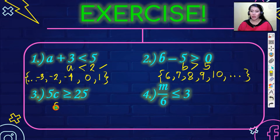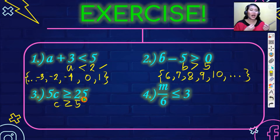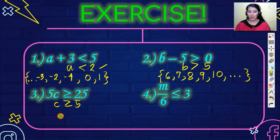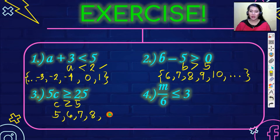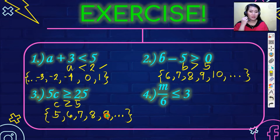For number three, c is greater than or equal to five. You may go back and watch Part 1 again to review the property. The numbers equal to or greater than five start at five — five, six, seven, eight, nine, and so on. Close your set in a brace, and do not forget to always write your ellipses.